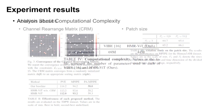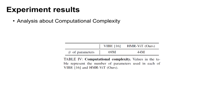For computational complexity in terms of trainable parameters, HMRV requires only 44 million parameters, 36% less than those of VIBE, which has 69 million parameters, as shown in Table 4.